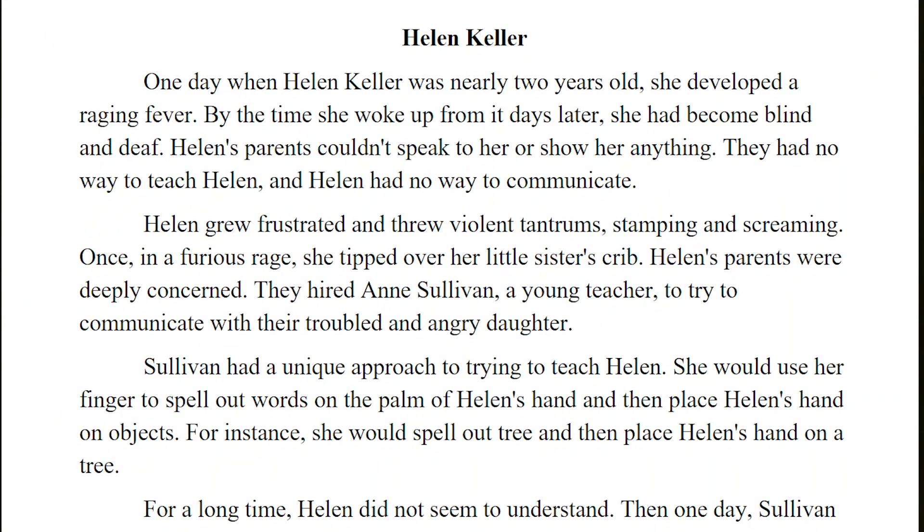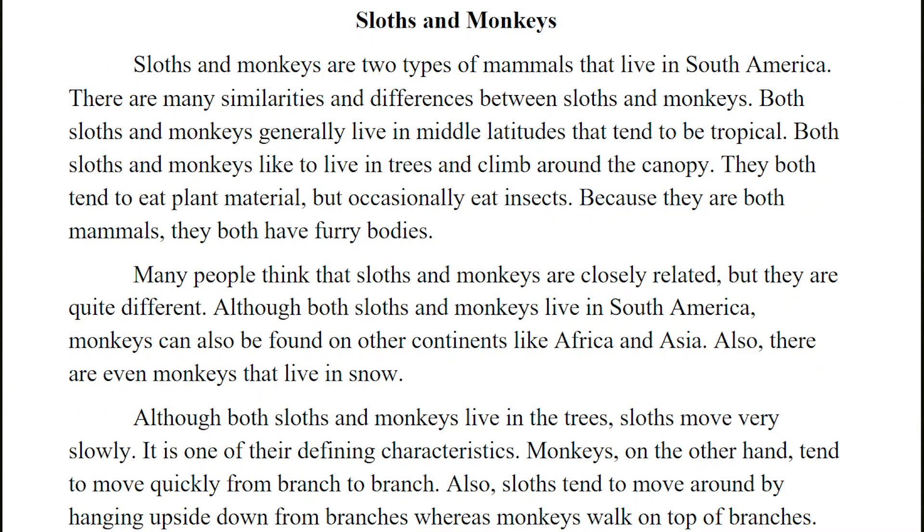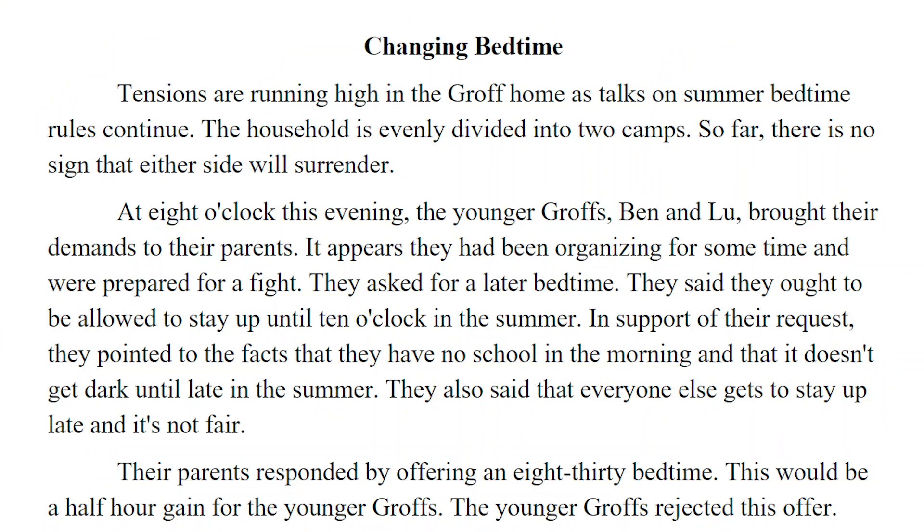One of the most exciting new features about DIBELS 8th Edition is the availability of equated scores. Equating is a statistical process by which we determine comparable scores across multiple different forms. The purpose of using equating is to address differences in difficulty across forms, despite measure developers' best efforts to make forms as equivalent as possible. This process is most obvious in oral reading fluency and maze, where every passage is a unique text, so there are obviously variations across each passage. The goal of using an equated score is to make scores across different passages as fair and equitable as possible.